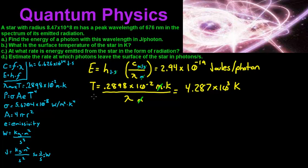For part C, it says: at what rate is energy emitted from the star in the form of radiation? The answer is going to be in watts. A watt is a rate of energy — it's kilograms times meters squared divided by seconds cubed. We're going to use the power formula: power in watts equals sigma, the Stefan-Boltzmann constant, 5.6704 times 10 to the negative 8 watts per meter squared per K to the 4th.